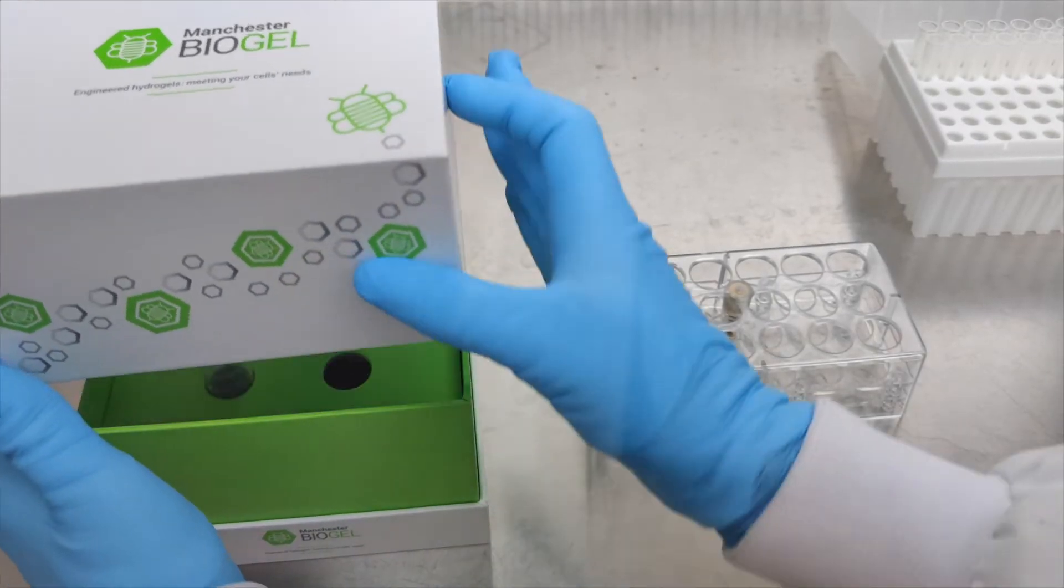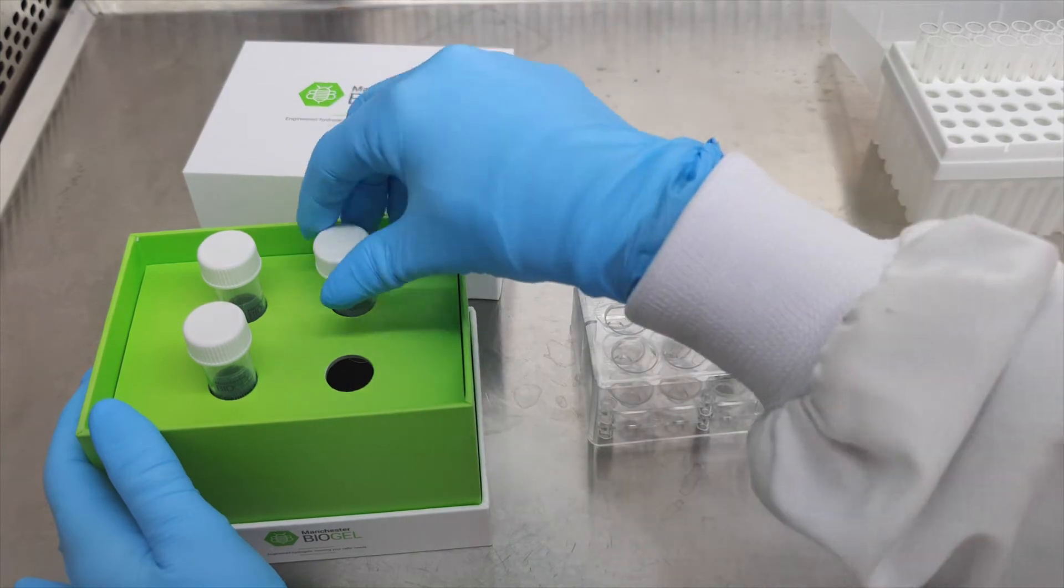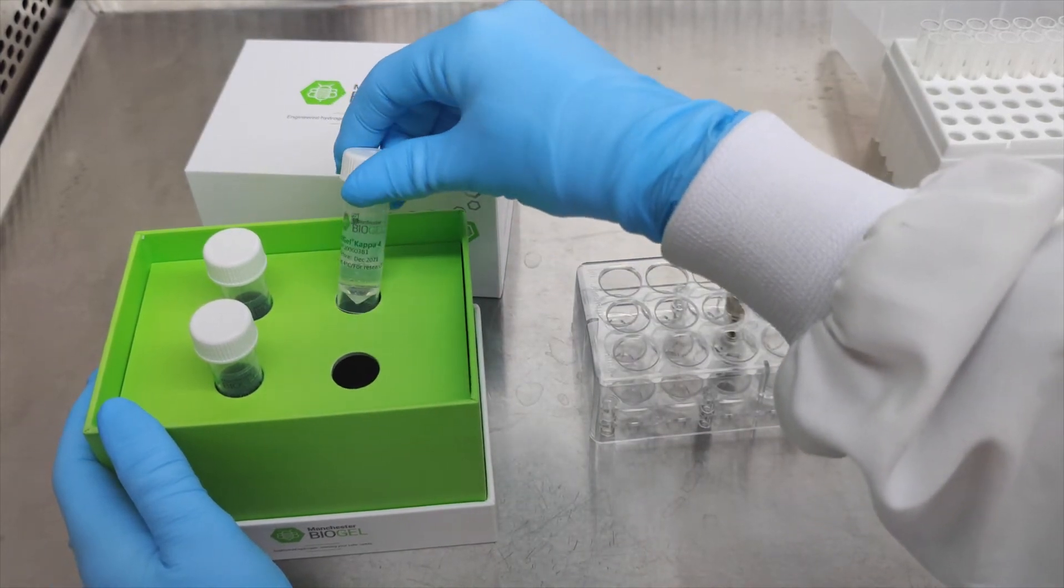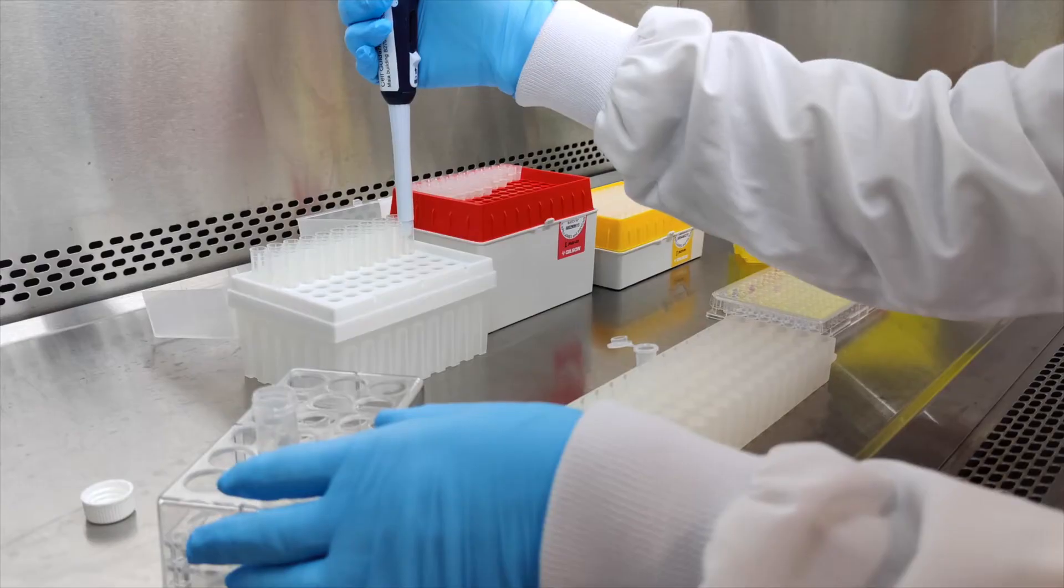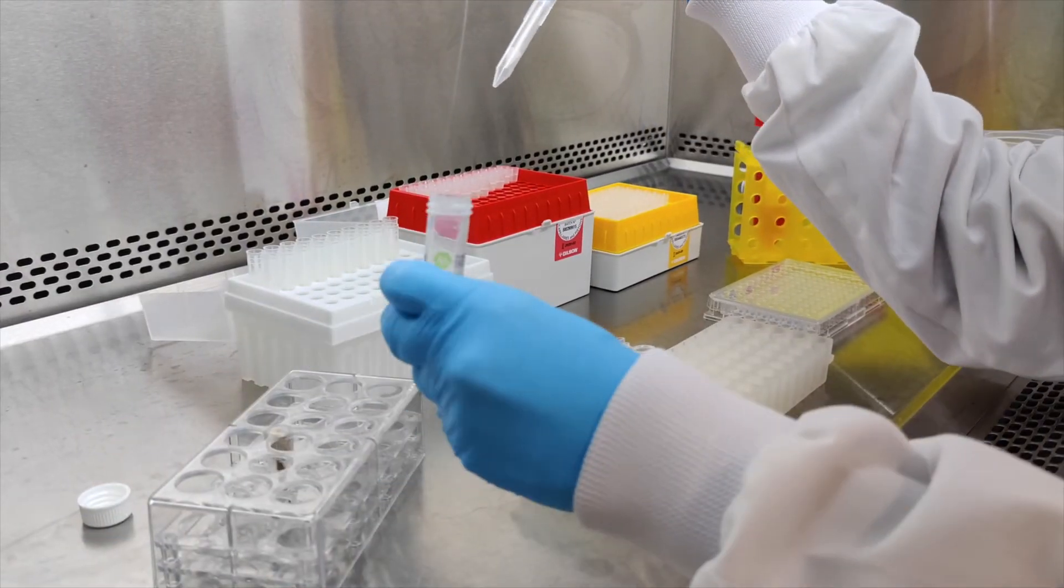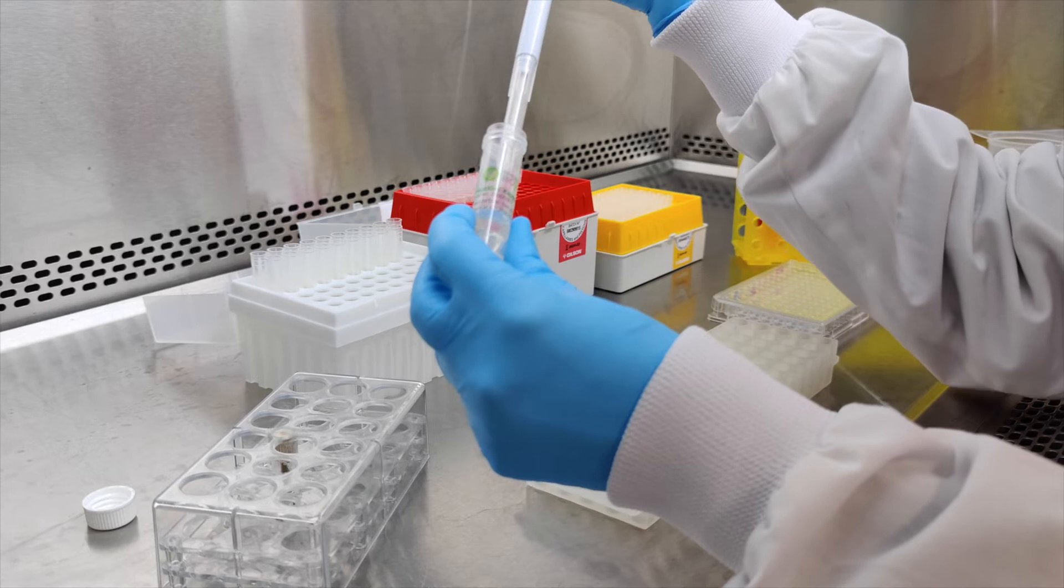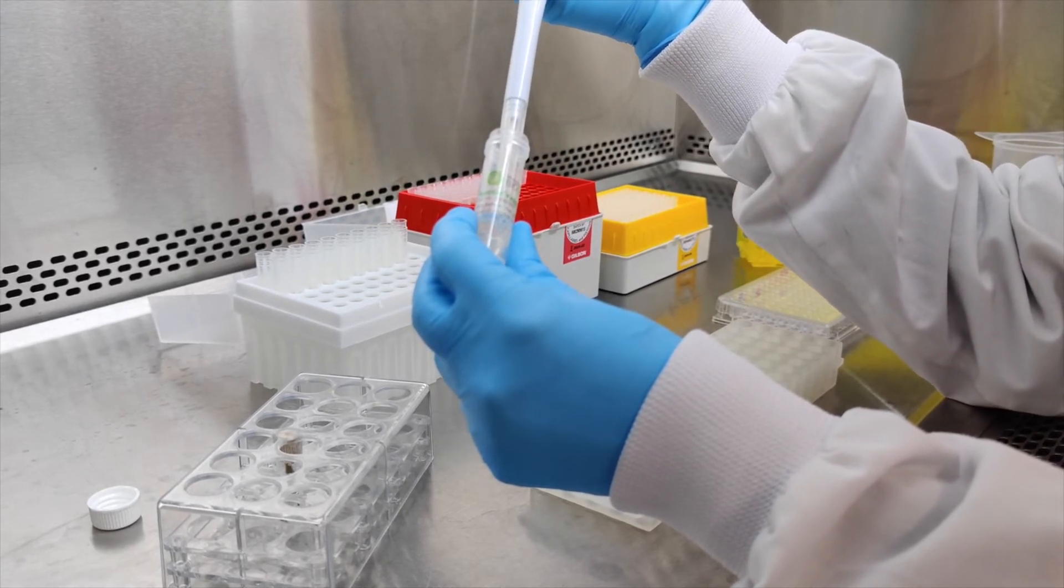Select which peptagel you'd like to use for your experiment. Allow peptagel to warm up to room temperature. Using a positive displacement pipette, transfer peptagel to a new microcentrifuge tube.